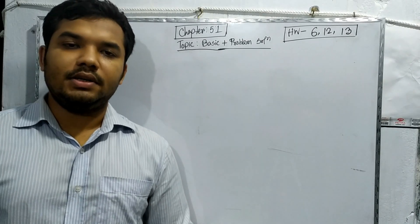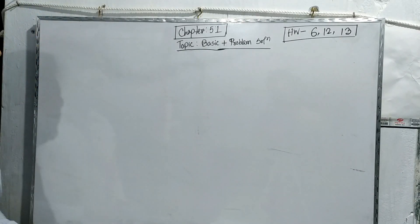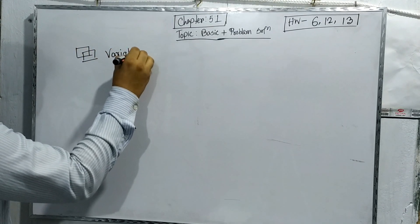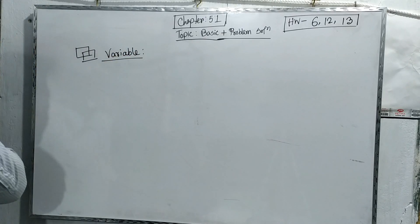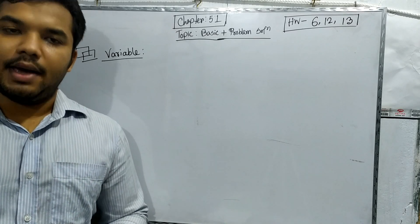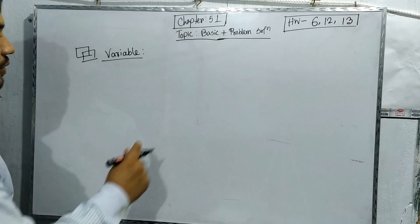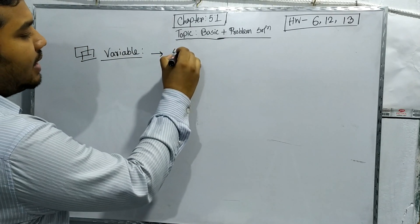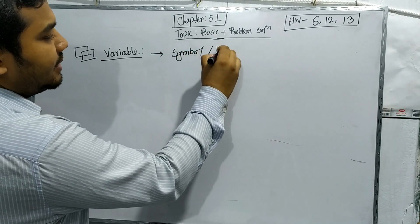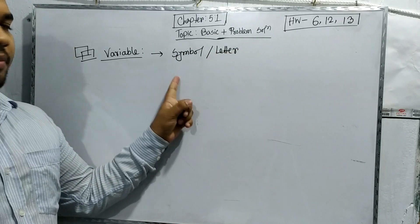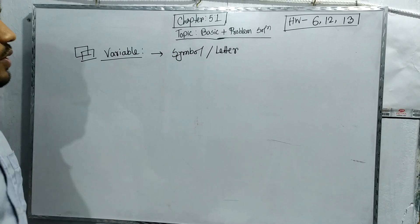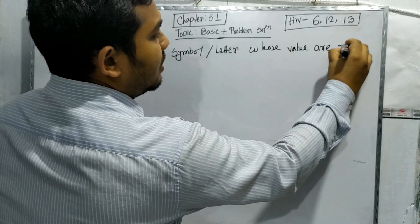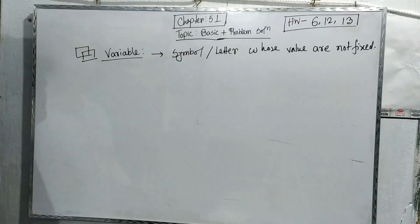This chapter 5.1 is actually focused on problem solutions. First of all, we are talking about the variable. A variable is something which can be represented by a symbol or letter whose value is not fixed. Something whose value is not fixed is called a variable.